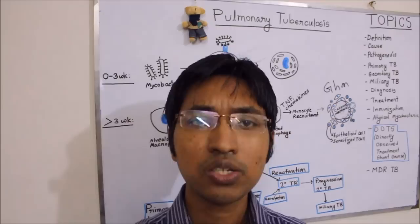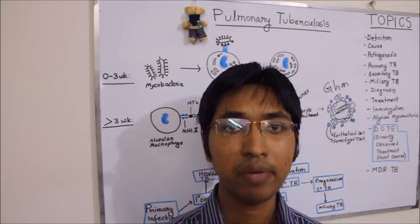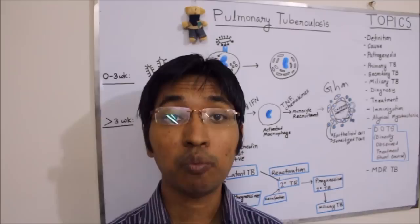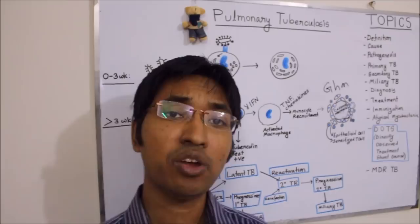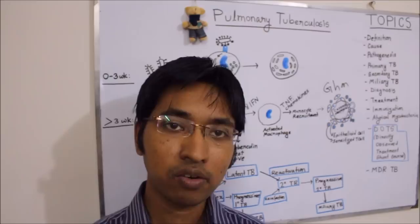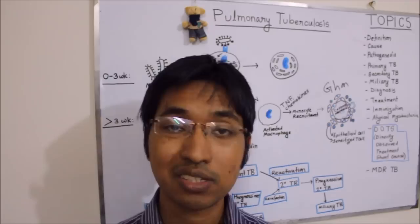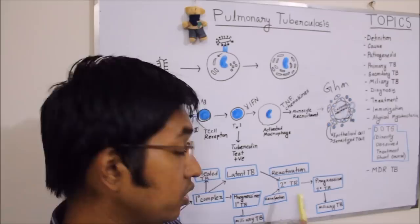In contrast to primary TB, the site of secondary TB is most commonly the apex of the lungs. The reason is that mycobacterium tuberculosis thrives in oxygen-rich areas, and the apex of the lung has higher oxygen tension — therefore that is the common site of secondary tuberculosis.